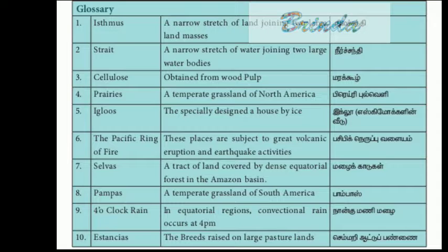The Pacific Ring of Fire: places subject to great volcanic eruption and earthquake activities. Silvash: a tract of land covered by dense equatorial forest in the Amazon basin. Pampas: a temperate grassland of South America. Four o'clock rain: in equatorial regions, conventional rain occurs at four o'clock. Estancias: breeds raised on large pasture lands.